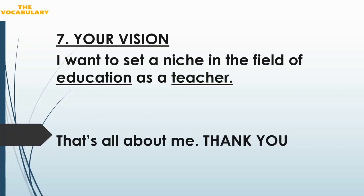The next and last point is your vision. Yahan aapne apne ambition, apne goal ke baare mein batana hai — what you really wanna become. You can say: 'I want to set a niche in the field of...' — 'Niche' means pehchaan, 'set a niche' means pehchaan banana. Then: 'as a dash' — aap kis designation mein apni pehchaan banana chahte hain. Like: 'I want to set a niche in the field of education as a teacher.' That's all — at the end you can say: 'That's all about me, thank you.'